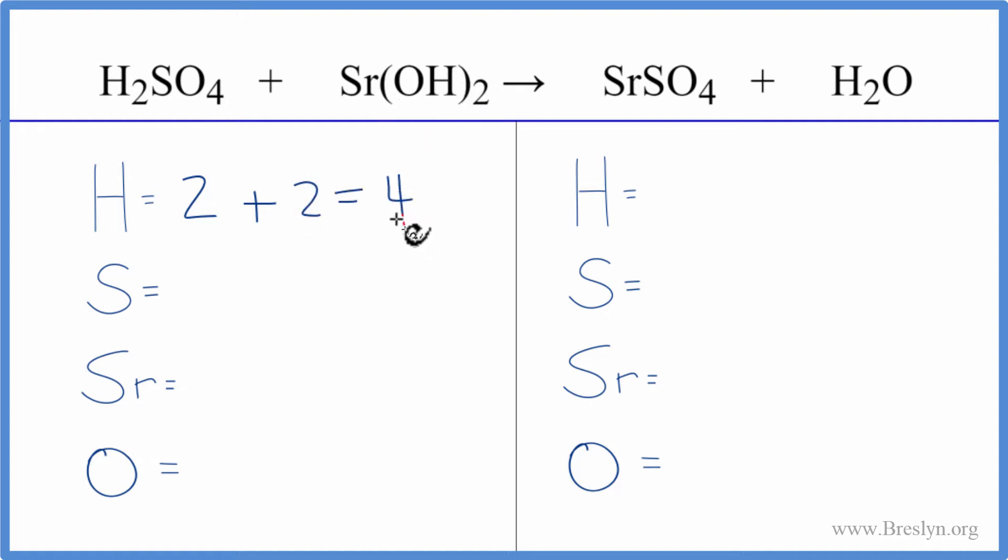We have sulfur, just one of those, strontium, just one of those, and then oxygen. We have four plus two times one, so we have six oxygen atoms on the reactant side.